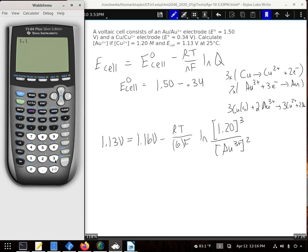So starting with everything on the left, 1.13. And I'll move this over. Minus 1.16. Now I'm going to get rid of that negative. And multiply by n and by Faraday. Divide by R. And by the temperature. That'll give me this, which should be equal to the natural log of all this. So I'm going to get rid of the natural log by taking the inverse natural log of my answer. That should be equal to this 1.20 over the Au.